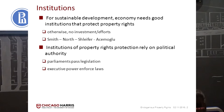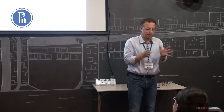Every economist knows, and every great economist has said, that for sustainable development an economy needs good institutions that protect property rights. The intuition is simple: you need incentives for investment and to exert efforts, and institutions of property rights protection provide these incentives. Every great economist of the last 300 years said this — Adam Smith, Douglas North, Andre Shleifer, and Daron Acemoglu.